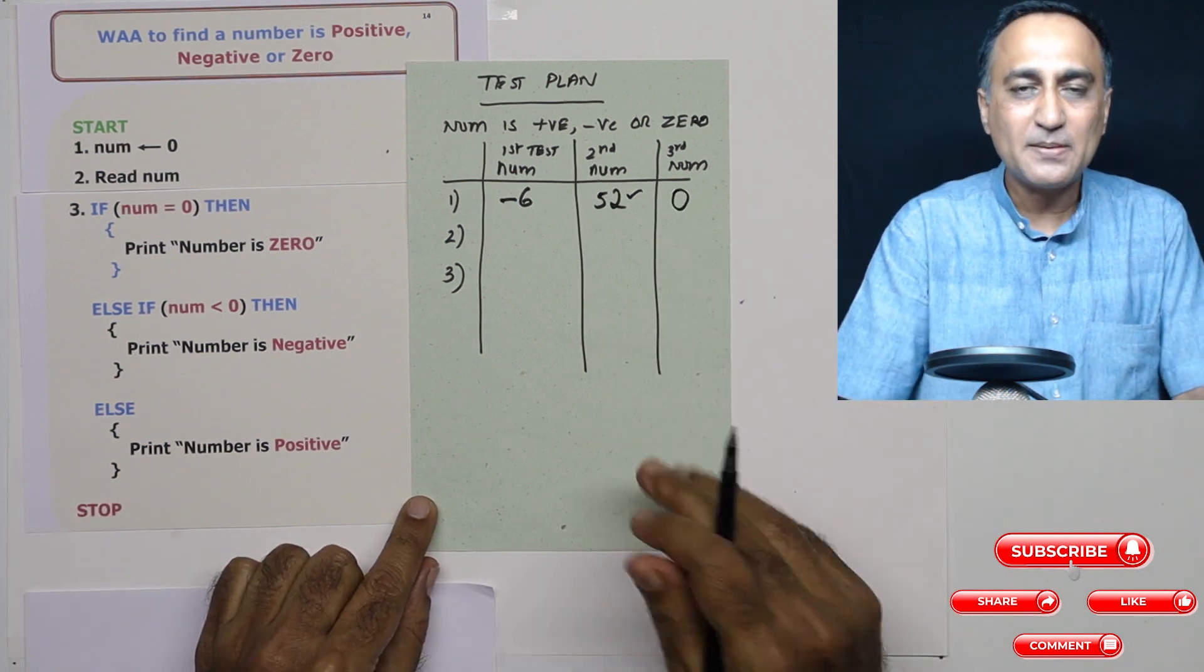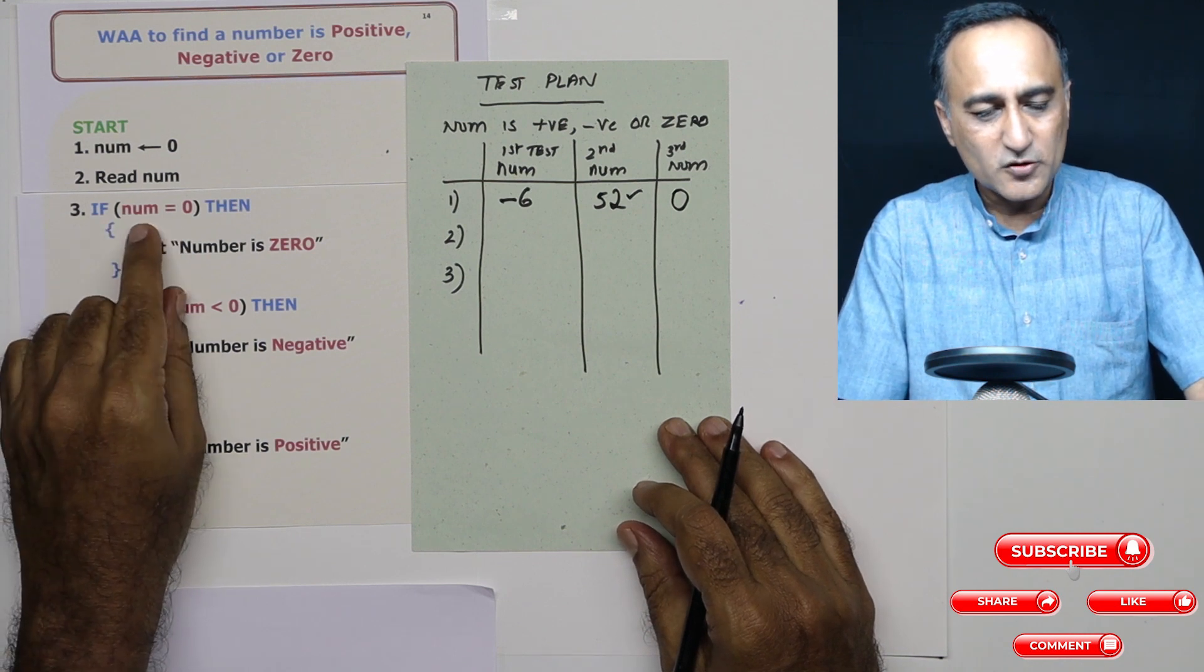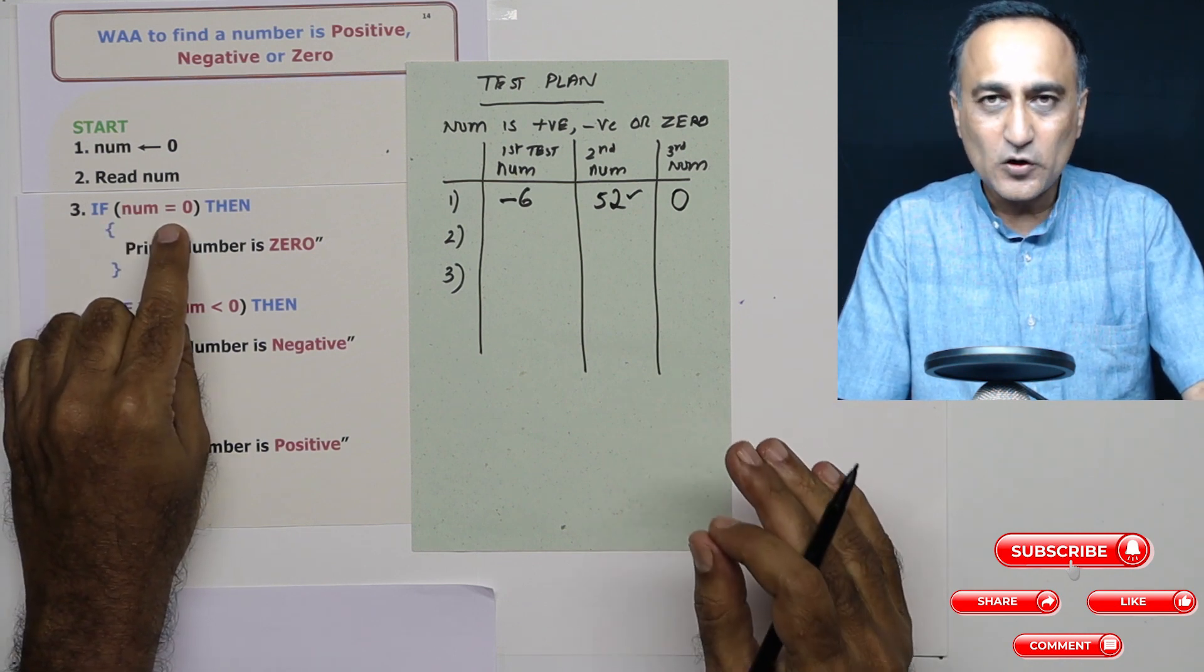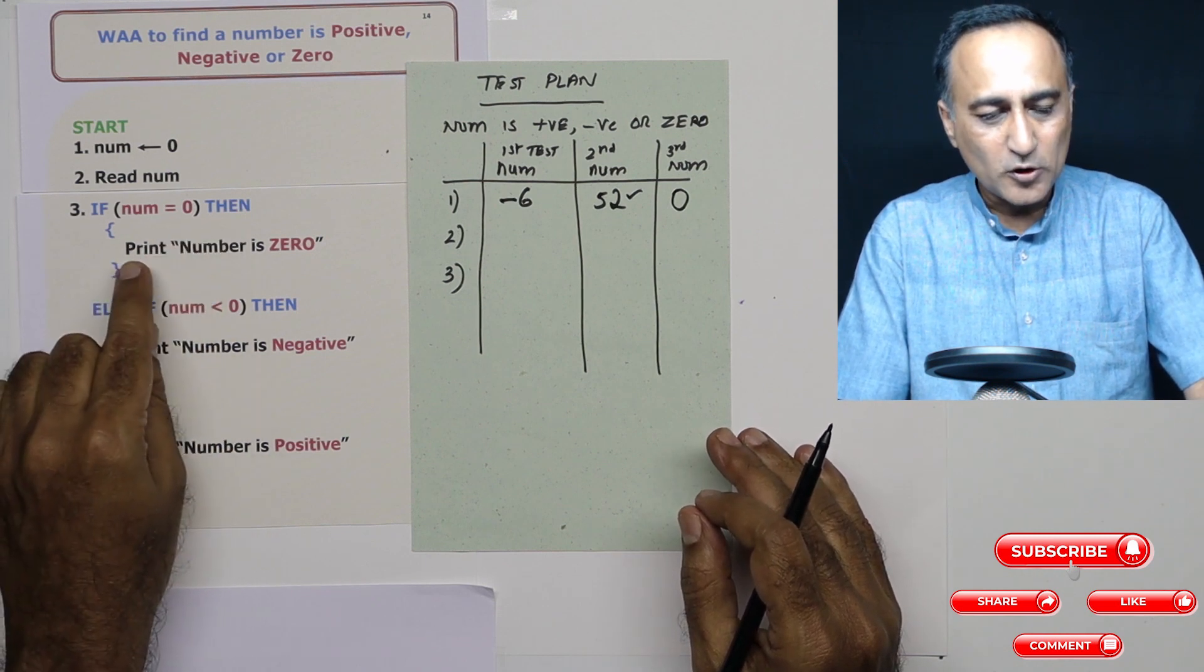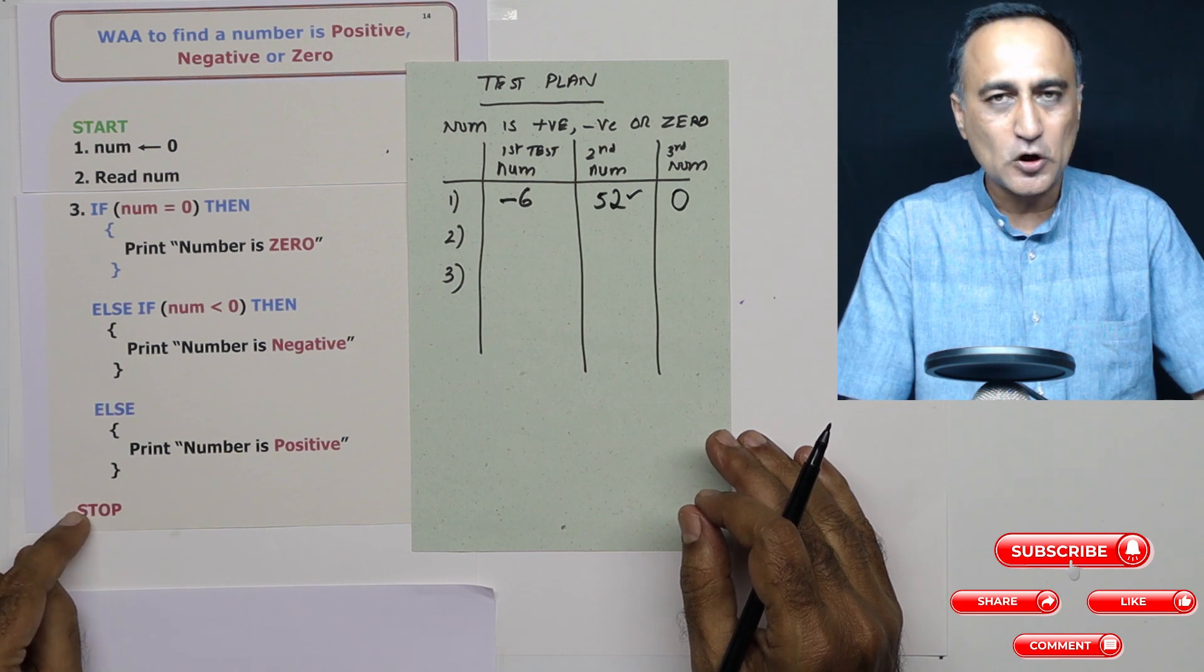Now the simplest case, taking number as zero. Number is equal to zero, zero is equal to zero. This is yes or true. Then I'm going to say print number is zero, and after this bracket, I am straight up going to come to stop.